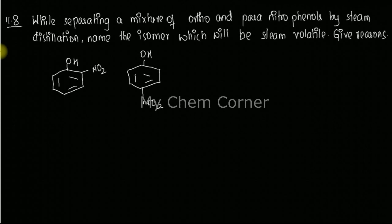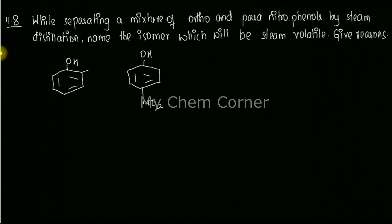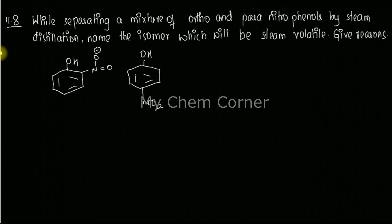Before deciding which is steam volatile, let's analyze the structures. When we look at the OH group and the NO2 group in orthonitrophenol, if we expand the NO2 structure, we have a single bond O with a negative charge and a double bond oxygen. Since OH and NO2 are at ortho positions to each other, the negatively charged oxygen and the acidic hydrogen on OH are close together, so bonding will take place between them — this is hydrogen bonding.